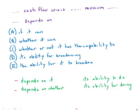On the GMAT, depends on if is always going to be wrong and depends on whether is going to be correct. Whenever we're talking about a choice and we're either contemplating this choice, hoping, wondering, we know it or don't know it, the choice has to be expressed in terms of whether.